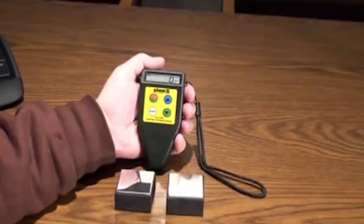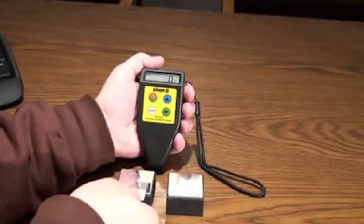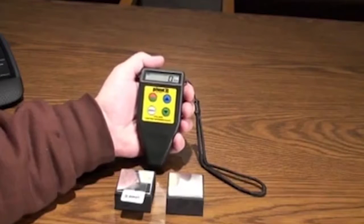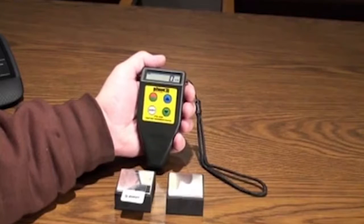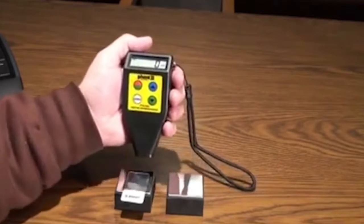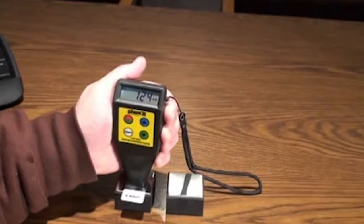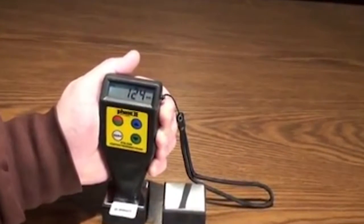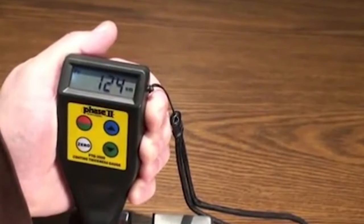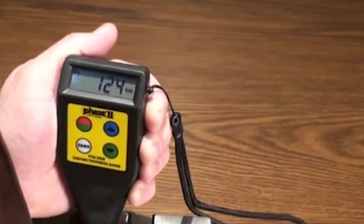Now select a calibration standard that is similar to the coating thickness of your application. Place it on top of the steel substrate sample. Then place the probe over the standard and press firm to flat. Readings will display on screen. Notice the FE showing on the left of the screen. This signifies that the substrate used was ferrous.